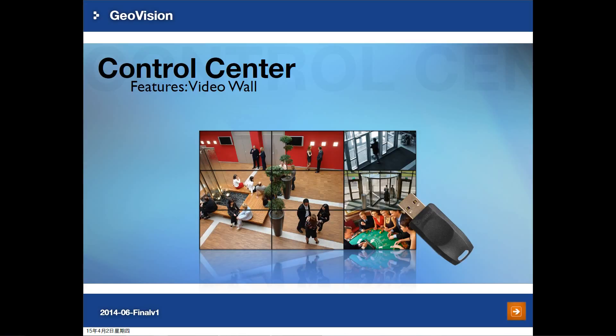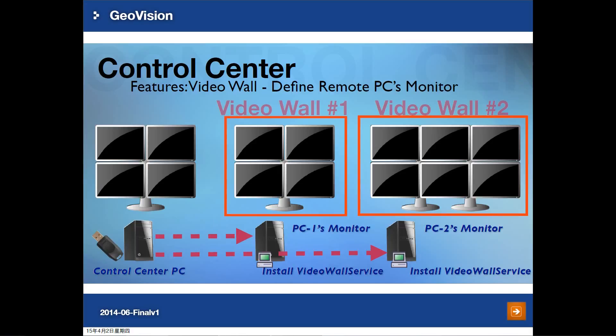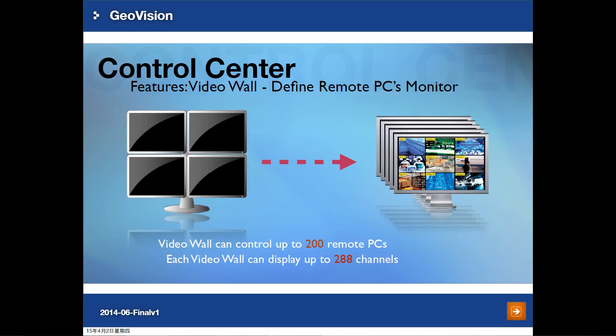In this session, we are going to introduce the video wall function. So what is video wall? You can think of it as multiple TV screens displaying content, but we generate this result from a computer. If you have multiple graphics cards in the PC, you can attach multiple monitors for this display. Video wall requires a license to run with Control Center, and the dongle has to be attached to the Control Center PC. Video wall requires a remote PC with video wall software installed. Control Center supports a maximum of 200 video walls, meaning 200 PCs can display camera images remotely. The maximum channel support for each video wall is 288 channels.